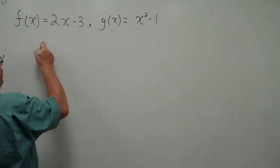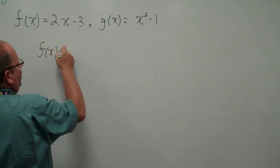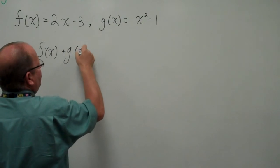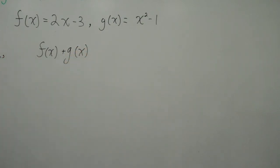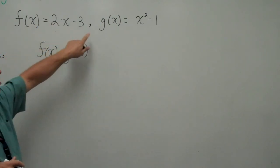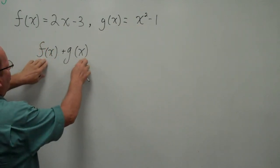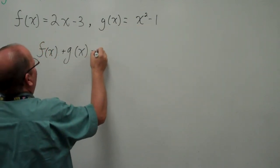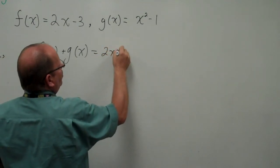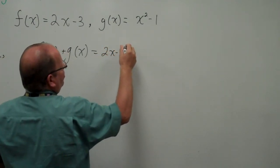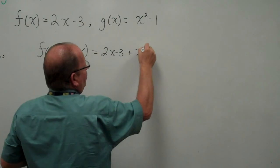We can do f(x) + g(x). Now this concept can be pretty easy for you if you understand that equal means is. f(x) is this, g(x) is that. If I'm going to add f(x) and g(x), I'm simply going to add (2x - 3) + (x² - 1).